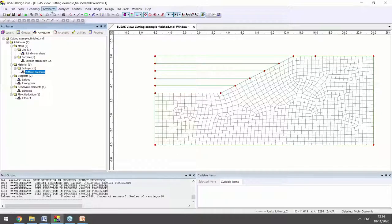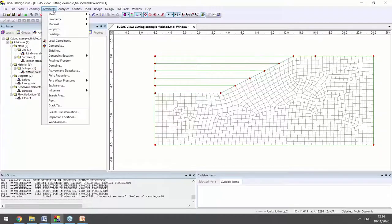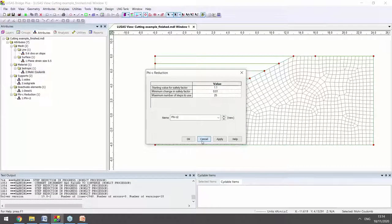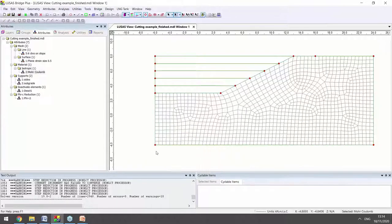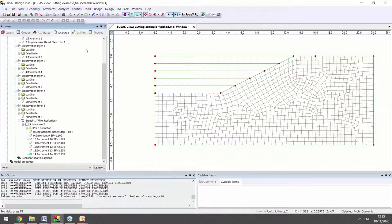The K-0 initialization allows us to start the analysis with the correct at-rest soil pressures. We can also define which parts of the model are to have a material strength reduction through attributes Phi C reduction. In this example, the Phi C reduction might be applied to the whole model, but in a model where you've got more than one slope or multiple different retaining walls, or even several different soil materials, you could consider each in turn by using a separate Phi C attribute.